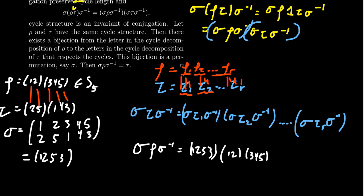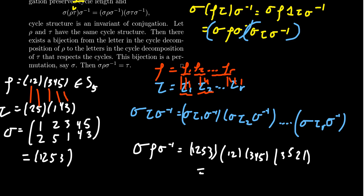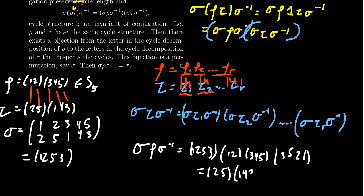Tracing through: 2 goes to 1 (via sigma inverse), 1 goes to 2 (via rho), 2 goes to 5 (via sigma) — so 2 maps to 5. Then 5 goes to 2, 2 goes to 1, 1 goes back to 2... completing that cycle (2,5). For the next cycle: 1 goes to 3, 3 goes to 4, giving 1 goes to 4; 4 goes to 5, 5 goes to 3; and 3 goes to 5, 5 goes to 3, 3 goes to 1 — giving us exactly tau = (2,5)(1,4,3). This confirms that in Sn, conjugates are exactly those permutations with the same cycle structure.